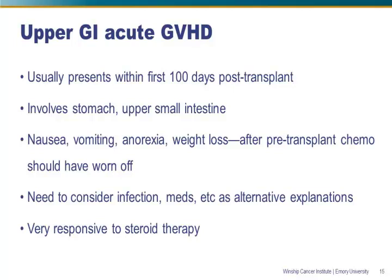Other things that need to be considered include infection and medications as alternative explanations. The important point is that upper GI GVHD is fairly unique in that it is extremely responsive to steroid therapy, both topical and systemic. This is a very good type of graft-versus-host disease to have, and it typically responds to much lower doses of steroids than we have to use for some of the other types.